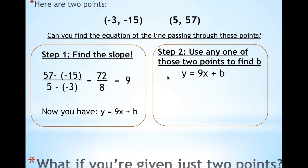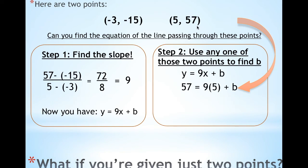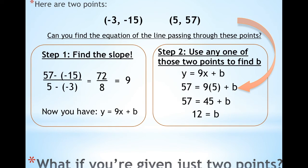Taking what I have with my slope, I'm going to use (5, 57) to plug into my equation. So I get that 57 is y and 5 is x. And if I do the work, I get that b is equal to 12.